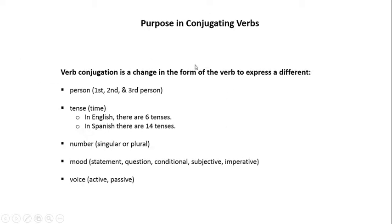Now, we're going to review the purpose in conjugating verbs on this slide. Verb conjugation is a change in the form of the verb to express a different person — for example, first, second, or third person. A different tense. Tense refers to time. In English, there are six tenses, three of which are present, past, and future.